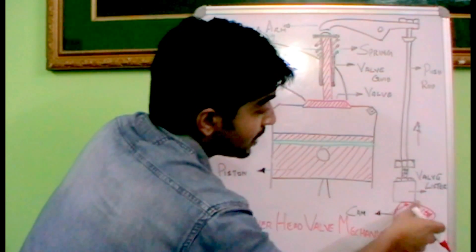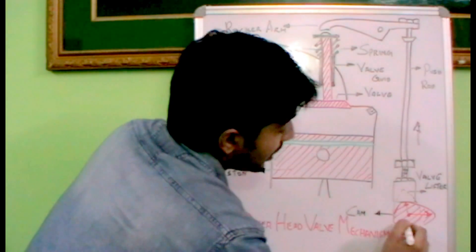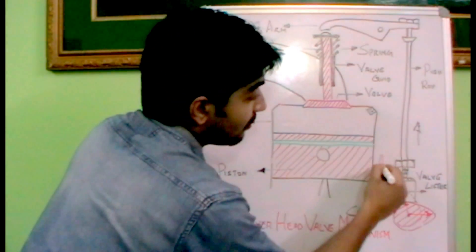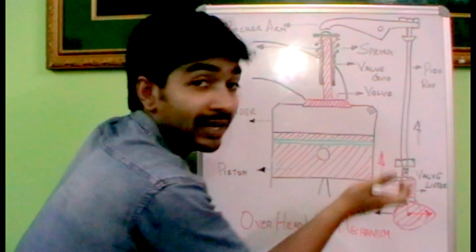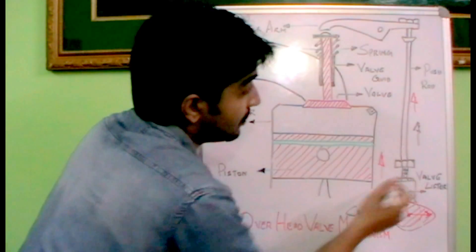That means when the cam rotates, when this profile reaches here, as drawn like this, what happens? Normally, it will lift the valve lifter. That will tend the valve lifter to move up. So when the valve lifter moves up, normally the push rod moves up because it is connected towards the valve lifter.